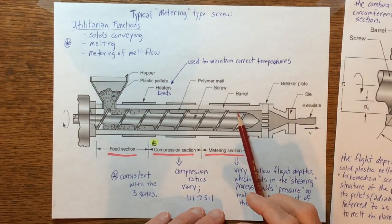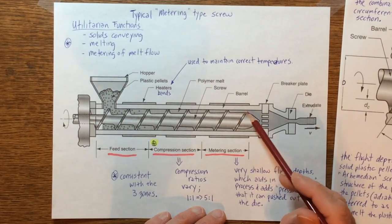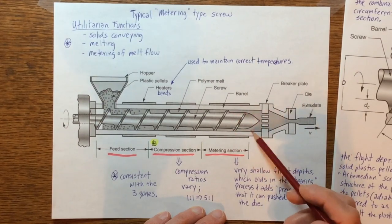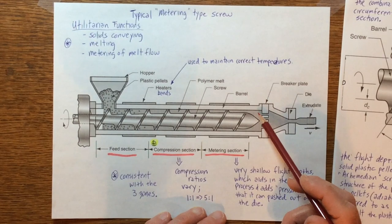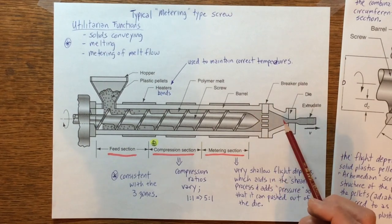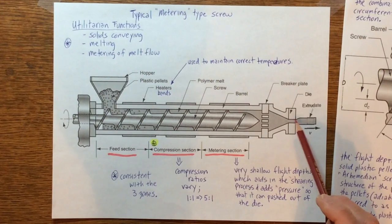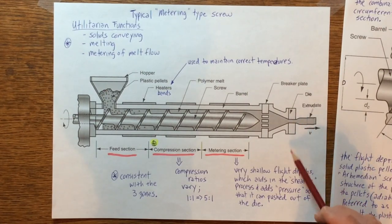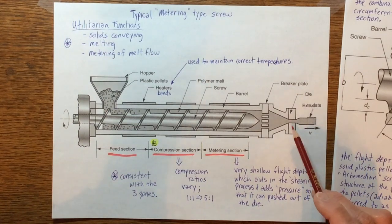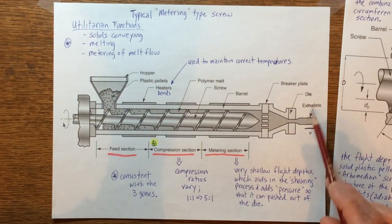So then ultimately, once this thing continues, once it gets to this area it's basically all in a liquid form. It's going to have a rather high viscosity most of the time, but nonetheless it can be forced through the end of this and into the die and come out whatever the opening of this die may look like.